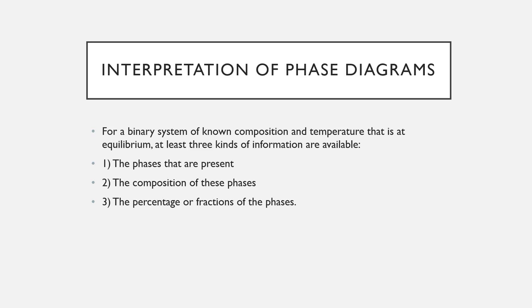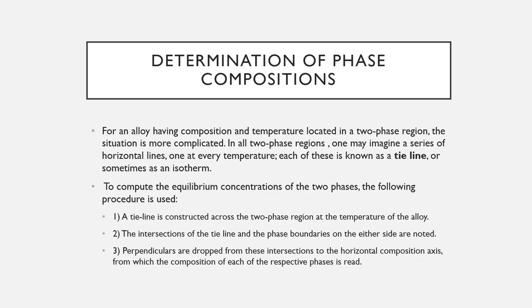Determination of phase compositions: the first step is to locate the temperature-composition point on the phase diagram. Different methods are used for single and two-phase regions. If only one phase is present, the composition of that phase is simply the same as the overall composition. For example, a 68 wt% Ni / 48 wt% Cu alloy at 1100°C has only the alpha phase present, with composition 68% Ni. For a two-phase region, one may imagine a series of horizontal lines — tie lines or isotherms.